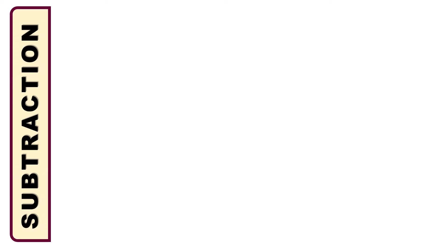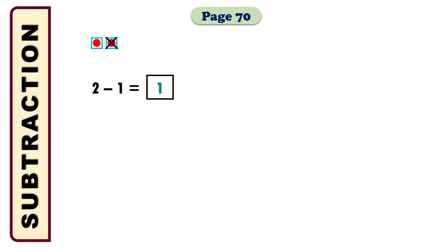Today we will do some maths from page 70. Number 1 is already done and we will learn how to do this kind of subtraction. In the first example it is given that 2 minus 1 is equal to 1. First of all they have taken 2 boxes and among the 2 we have to subtract 1 — that means we must cross 1 box. So how many boxes are left? There is only 1 box remaining, so 2 minus 1 equals 1.